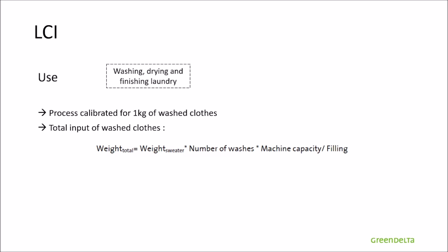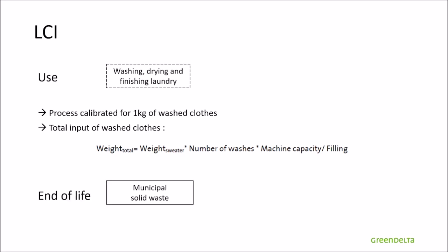For the use stage, the ECOINVENT process for washing, drying, and finishing laundry was adapted with an electricity input from the literature and calibrated to 1 kg of washed clothes. The input of the product in the life cycle process is given by the formula: weight of the sweater multiplied by the number of washes, multiplied by the machine capacity, and divided by the actual filling of the machine — to allocate the sweater depending on how full the washing machine is. For the end of life, the ECOINVENT process for municipal solid waste was used as-is with no modification.